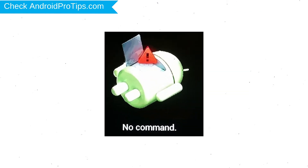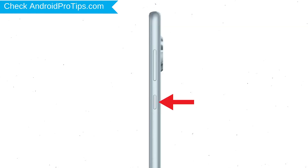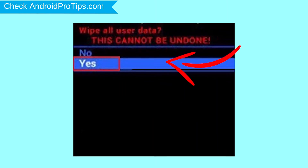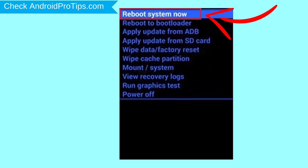Afterward, you will see the Android exclamation mark. While holding down the power button, press and release the volume up button. Next, choose the option to wipe data and factory reset — use volume buttons to select and the power button to accept. Then select the Yes option. Finally, select reboot system now.